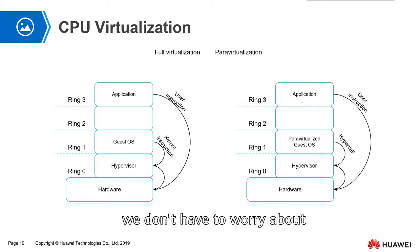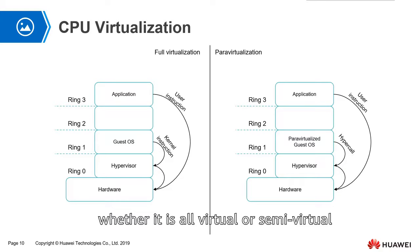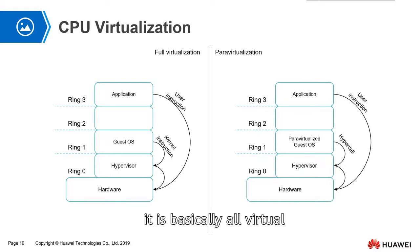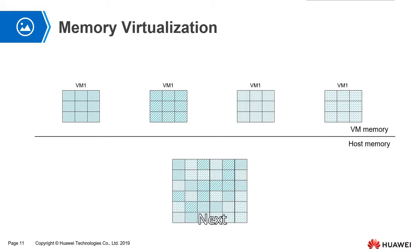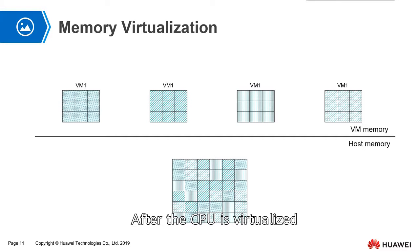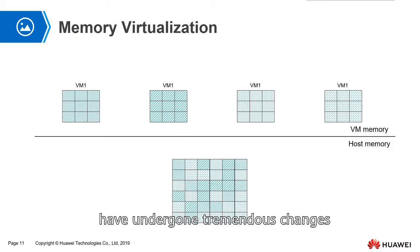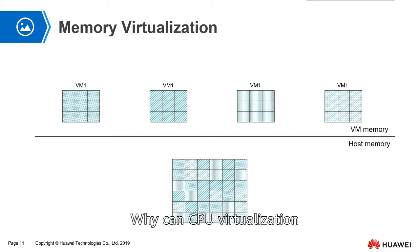Regarding CPU virtualization, we don't have to worry about whether it is full-virtual or semi-virtual, because after hardware virtualization it is basically all full-virtual. Next, let's take a look at memory virtualization. After the CPU is virtualized, the components and memory related to the CPU have undergone tremendous change. Why can CPU virtualization lead to memory virtualization?